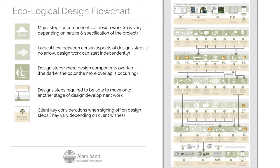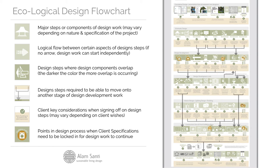The orange strips indicate critical path checks that the client needs to make when they receive a stage of design work from their designers — what are the things you really need to watch out for? There are also points where the client needs to specify certain things so the design work can continue to flow, and there are a lot of relationships between the arrows and the client decision-making.